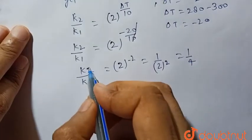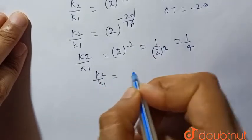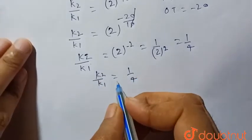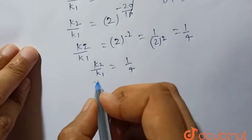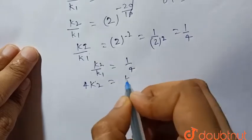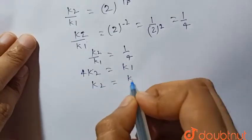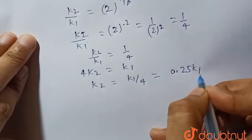So we have to find the relation between k2 and k1. k2 by k1 is equal to 1 by 4, that is k1 is equal to 4k2, or 4k2 is equal to k1, or k2 is equal to k1 by 4, or 0.25k1.